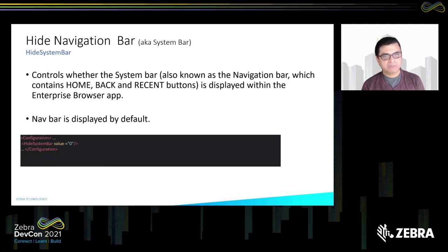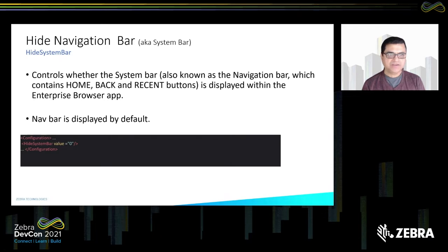The next one is Hide Navigation Bar, or system bar. Many applications do not need access to the navigation bar — they don't want end users pulling it down and hitting home, back, or recent buttons. So you can disable that in the config file or call this API in your application to disable it as well.